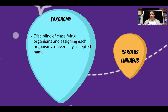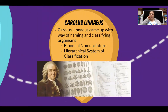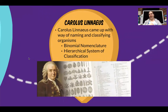Those are the scientific names you may have heard at different points. Carolus Linnaeus was the person who came up with our ways of naming organisms, which we call binomial nomenclature, as well as classifying organisms. The system of classification that we use is called the Hierarchical System of Classification. We still use both of these systems today, and we attribute them back to Carolus Linnaeus.